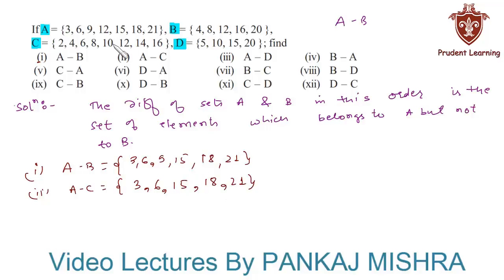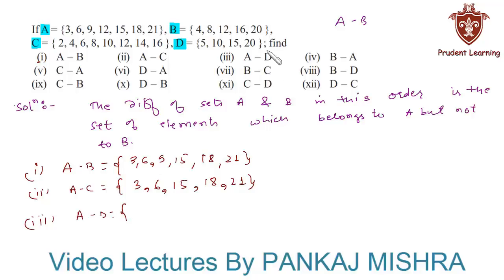In the third section we have to find A minus D. Here we have to find all the elements that are in A but not in D. We can see that 3, 6, 9, 12, 18 and 21 are present in A but not in D.